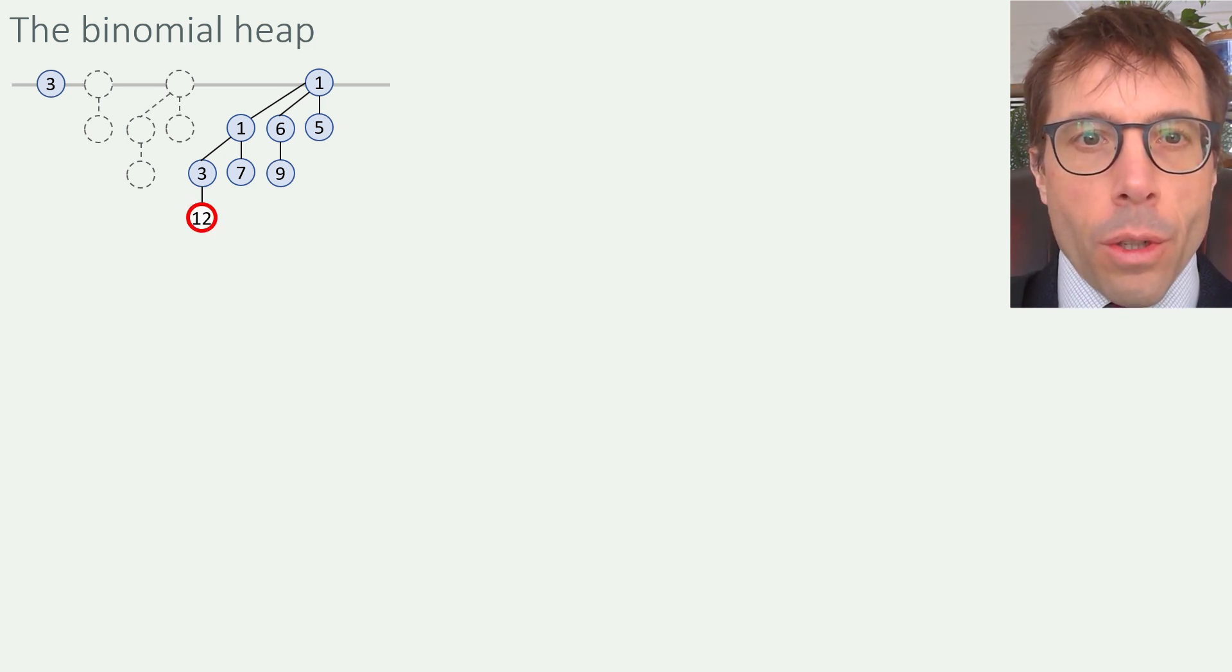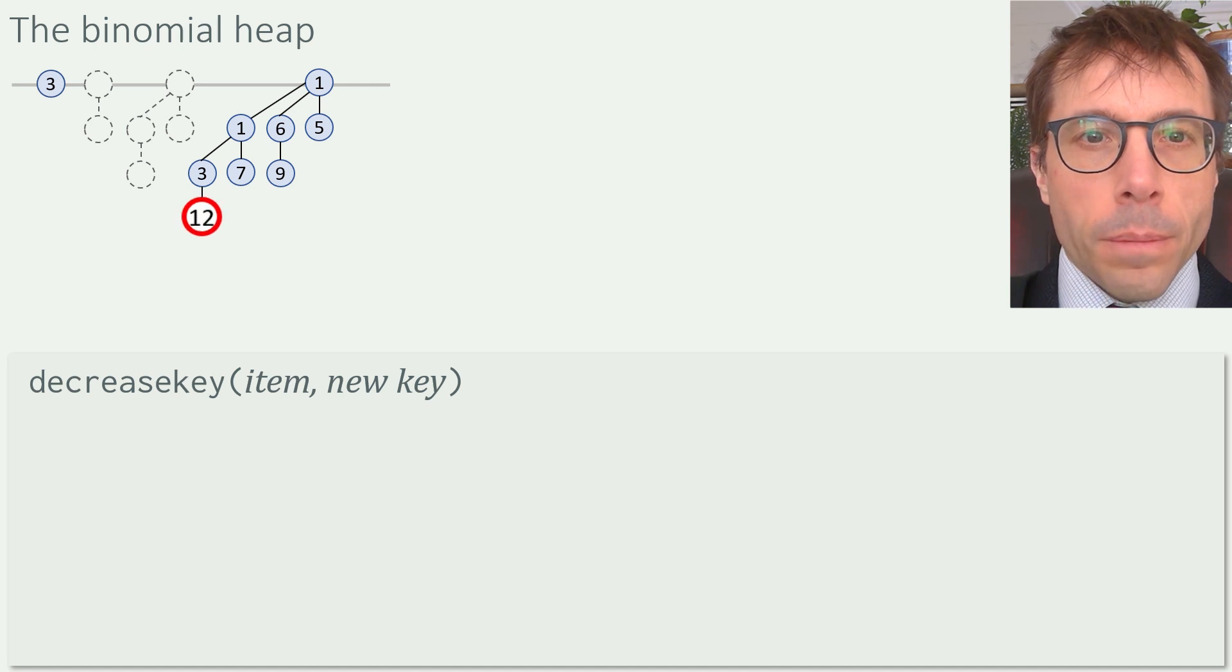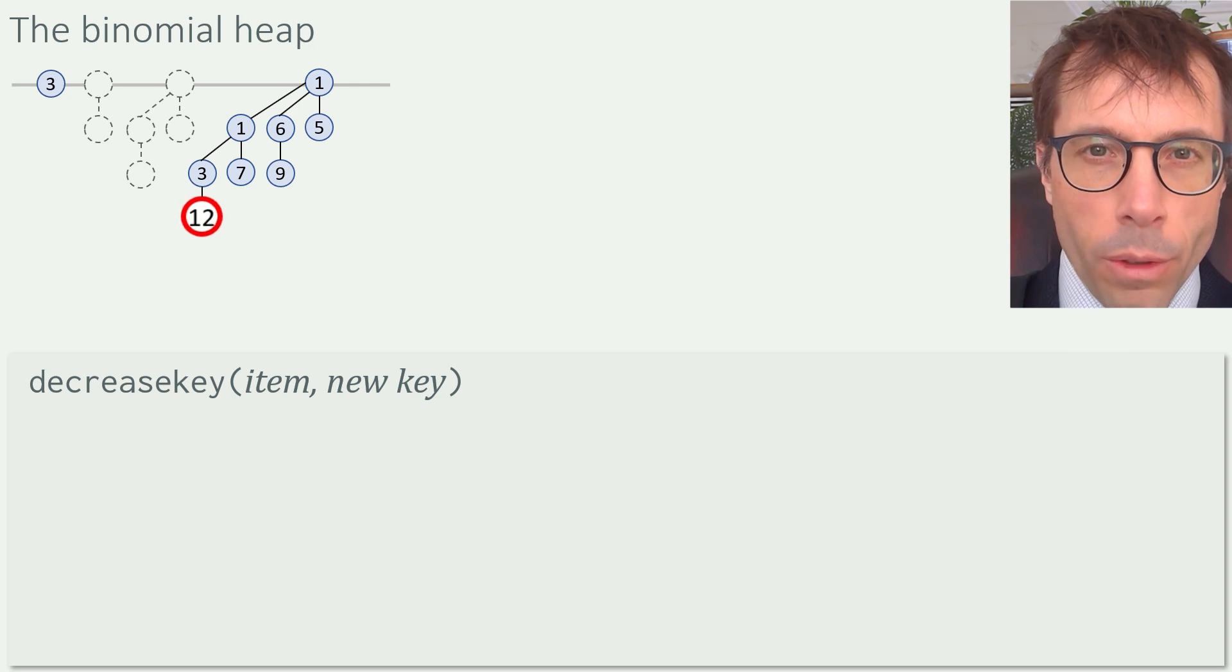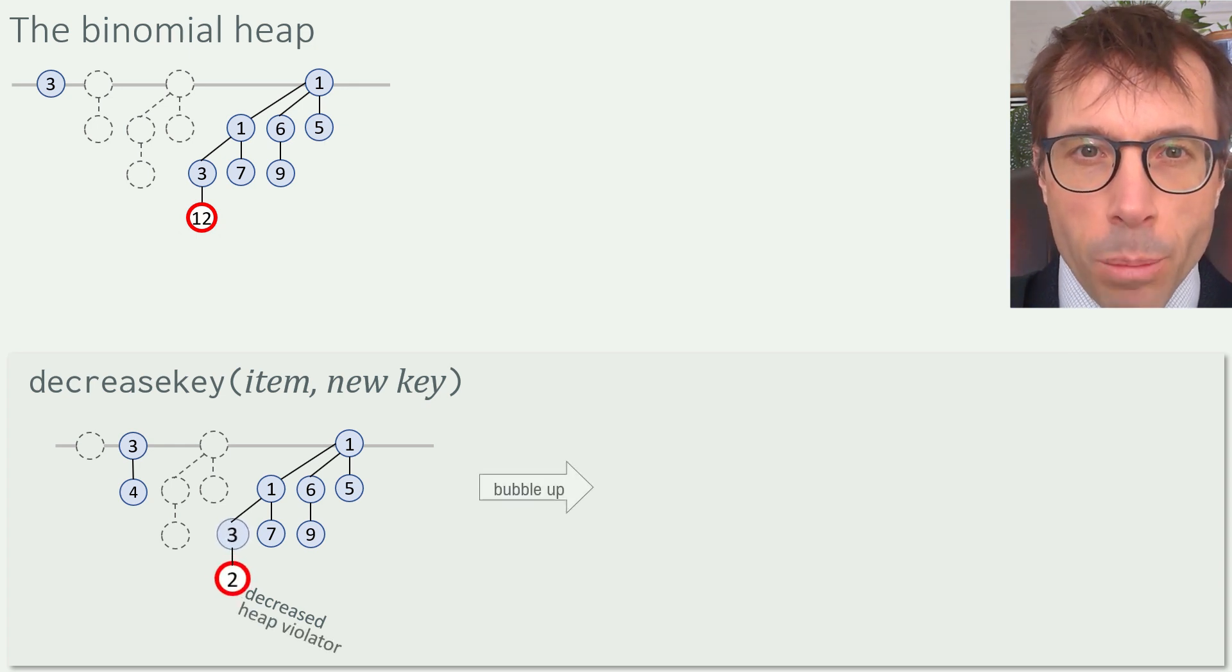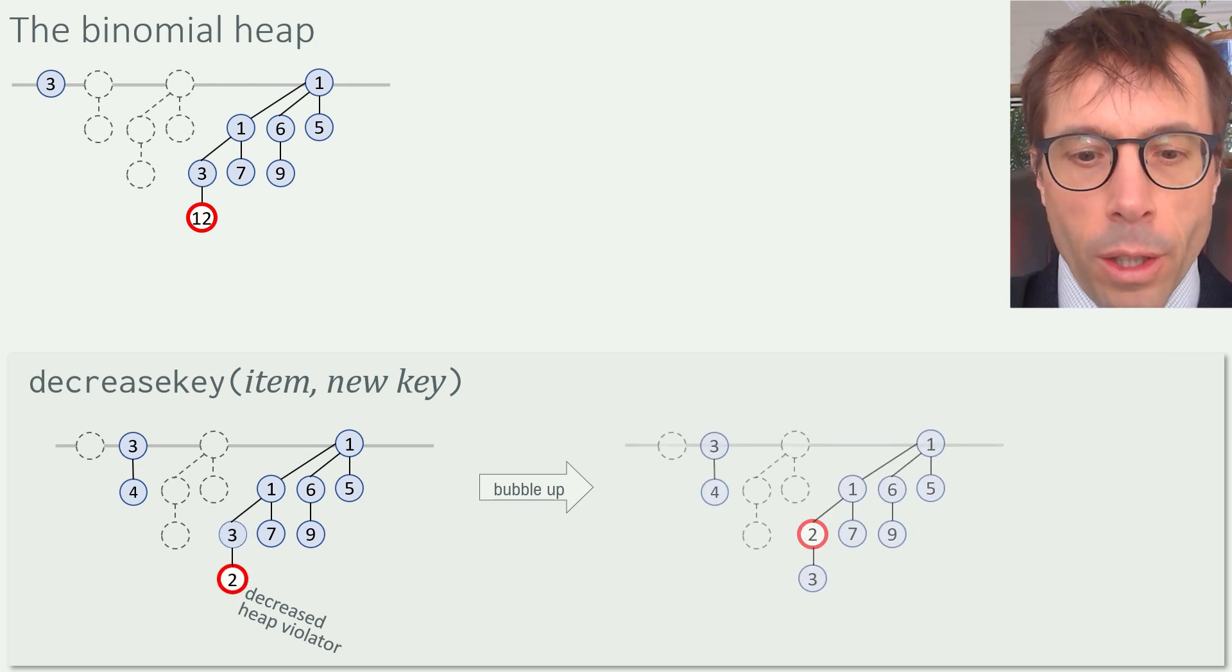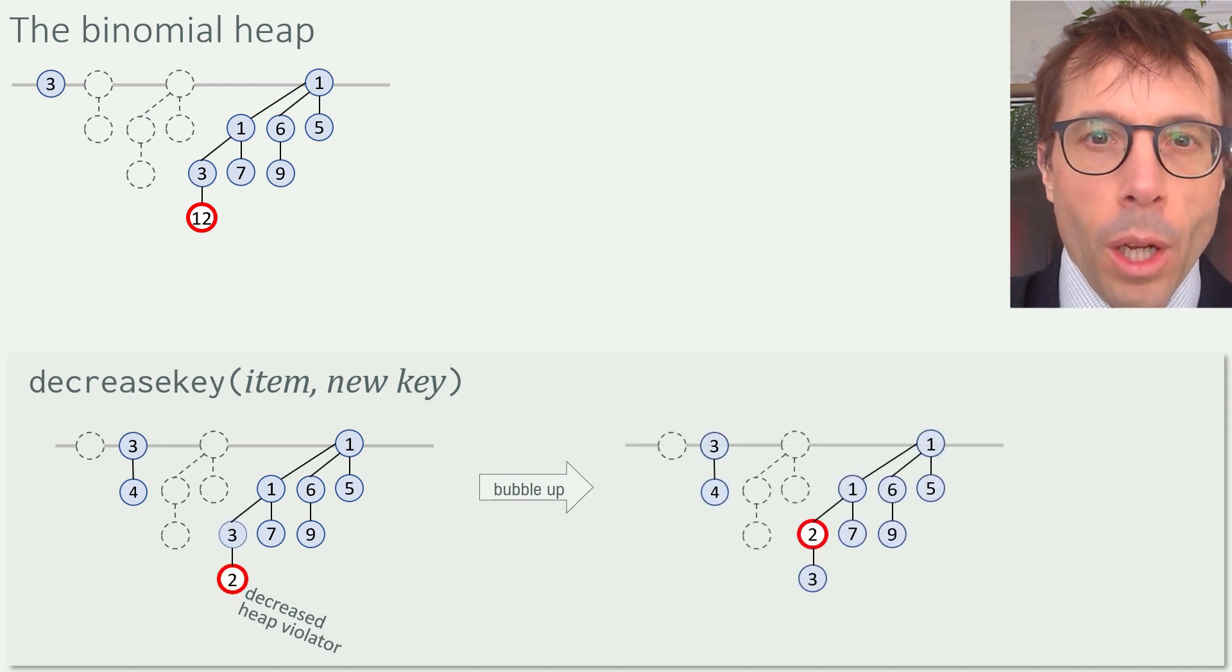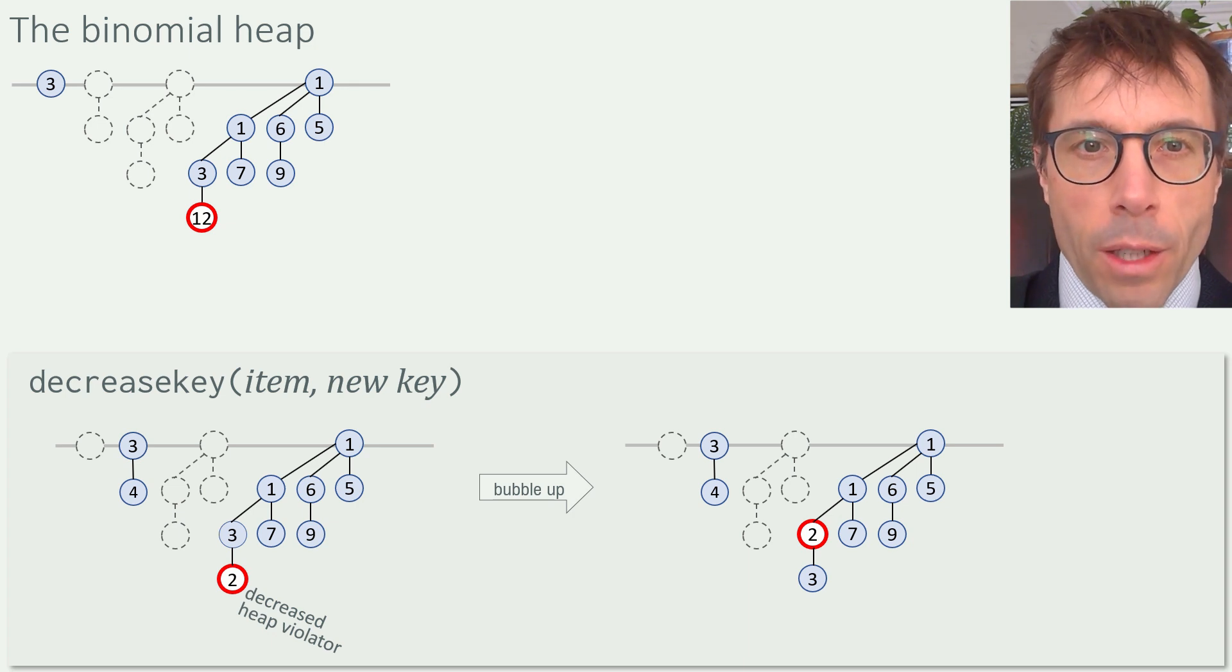Next operation, decrease key. Here, I'll take this bottom node, the one with key 12, and I'll decrease it to two. This means it's now in violation of the heap property. It's smaller than its parent. So we need to do something to fix up the heap. And we'll do exactly what we did for the binary heap. We'll just bubble this heap violating node up the tree until we get back to a nice heap.